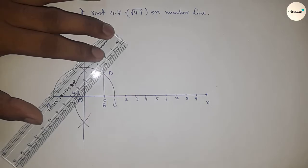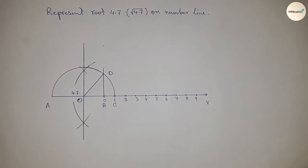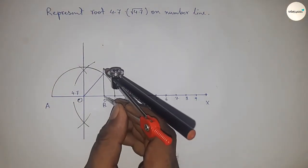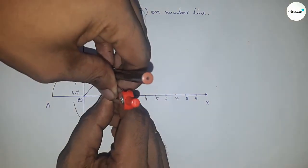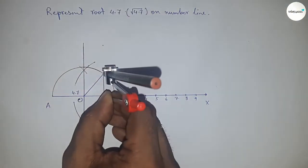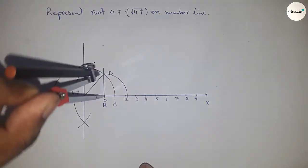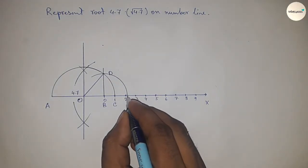Now take the distance BD with a compass and draw an arc which meets the number line at point B'. This is the representation of root 4.7 on the number line.